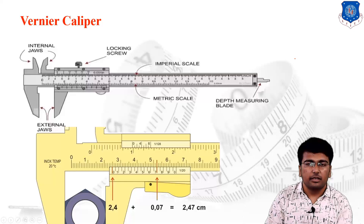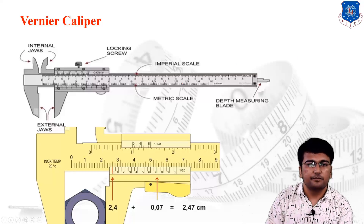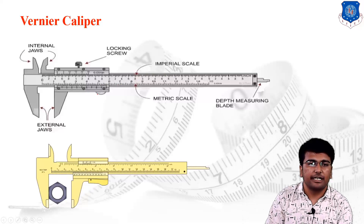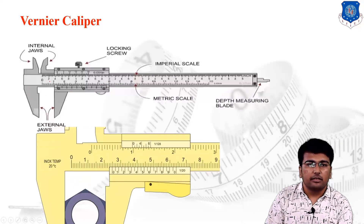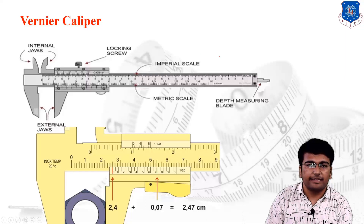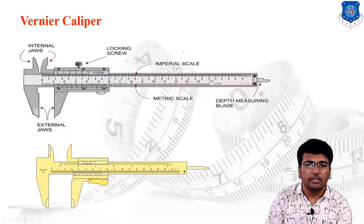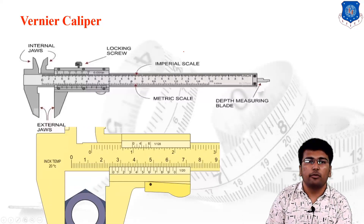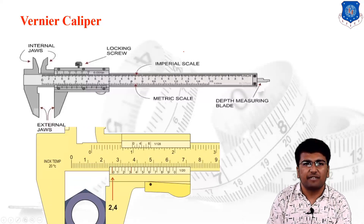Looking at the vernier caliper demo: we insert a part, then check the main scale reading — here the main scale reading is 2.4. Then count the number of coincident divisions on the auxiliary scale, multiply by the least count, and add the main scale and auxiliary scale readings together. This is the basic concept of reading a vernier caliper.